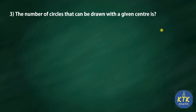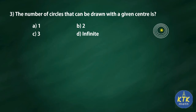Third question: the number of circles that can be drawn with a given center. Options are one, two, three, or infinite. Using one center point I can draw one circle, two circles, three, four, five — as many as I want. So the answer is infinite. Note: the reverse is also true — a circle has only one center point, whereas using one center we can draw infinitely many circles.